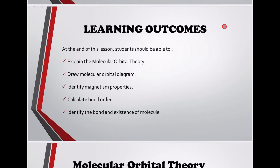Learning outcomes: at the end of this lesson, students should be able to explain molecular orbital theory, draw molecular orbital diagrams, identify magnetic properties, calculate bond order, and identify the bonding and existence of a molecule.